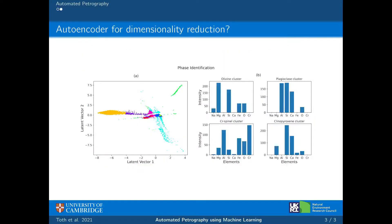To achieve this, we use a type of neural network called an autoencoder to transform the elemental data we have into this 2D space that you can see on figure A, where each data point actually represents a pixel in the elemental maps we took. Owing to the mathematical transformations that the autoencoder does, each pixel or data point, if they're very similar, plots very close in the 2D space. So to actually segment out the different phases, all we have to do is cluster this 2D space.